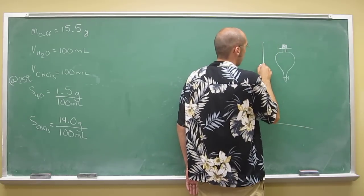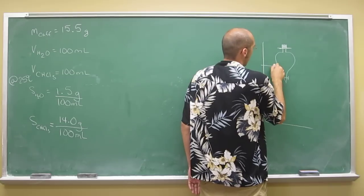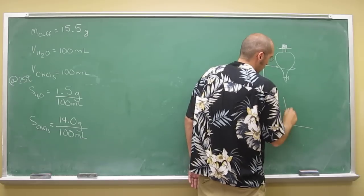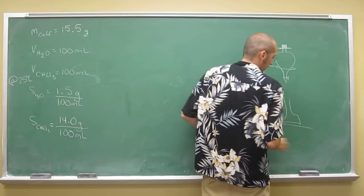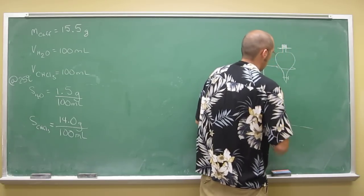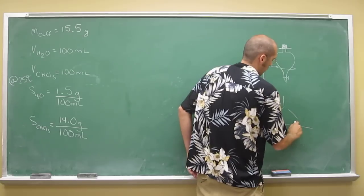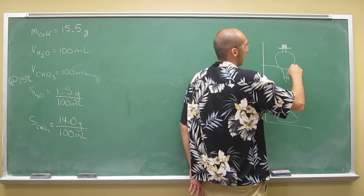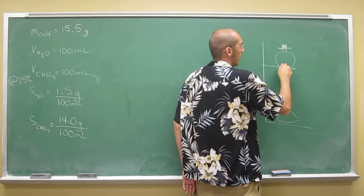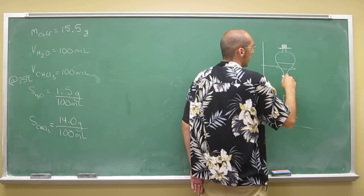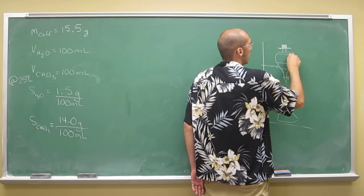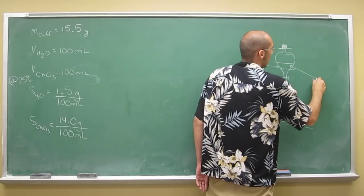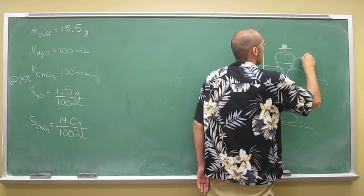It's on a ring stand. You've got your Erlenmeyer flask here. But the important thing is, when you put your water and your chloroform in the separatory funnel, you're going to have two layers and you'll see this rather distinctly. Since chloroform's more dense, it'll be on the bottom, and water, being less dense, will be on the top.